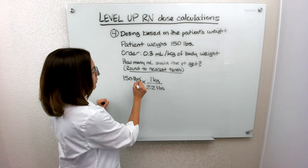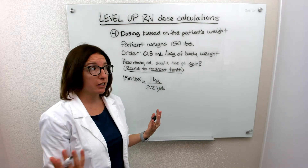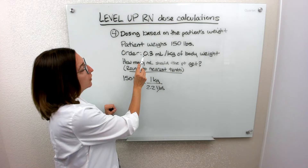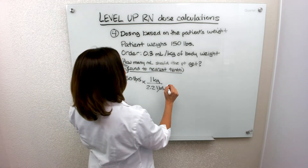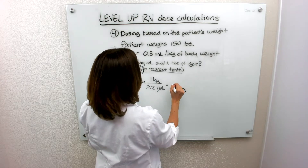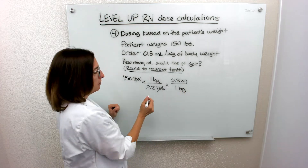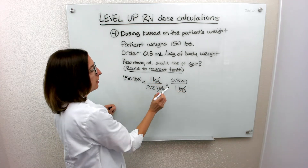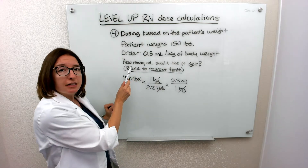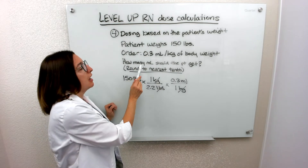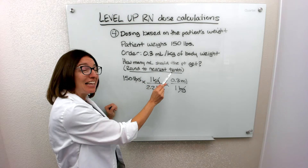This will give me kilograms — how much the patient weighs in kilograms. And then the order is for 0.3 milliliters per kilogram. So if we take 0.3 milliliters per kilogram, our kilograms cross out and we're left with milliliters. Pay close attention to this question — they asked how many milliliters the patient should get, and it also told us to round to the nearest tenth.